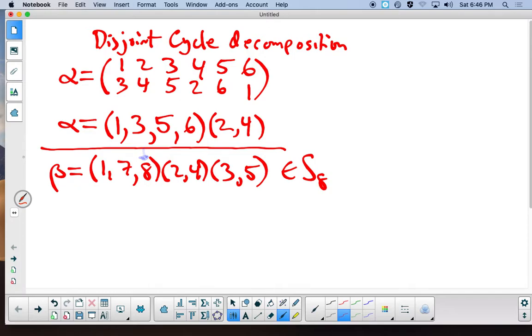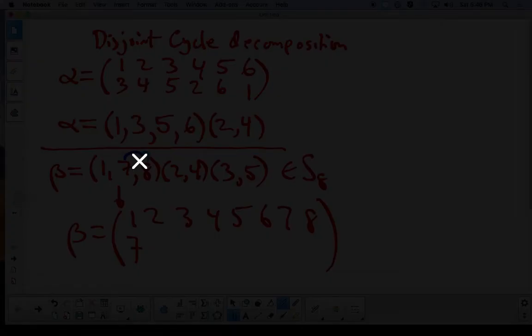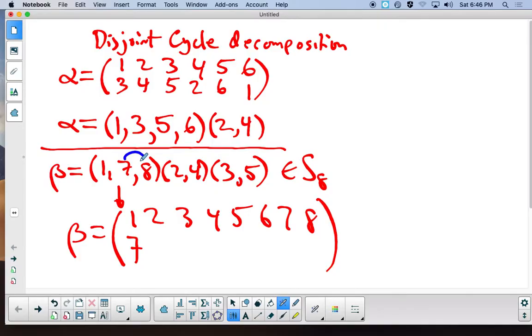If it's an element of S_8, that says that beta has a two-row notation that looks like 1, 2, 3, 4, 5, 6, 7, 8. And we again find the second row by just doing tracing. So 1 goes to 7, and that means that we say 1 goes to 7. And now what we look at is 7 goes to 8. And then we have 8 goes back to 1, so we have 8 goes to 1, and that completes the first cycle.